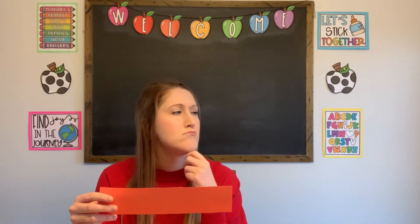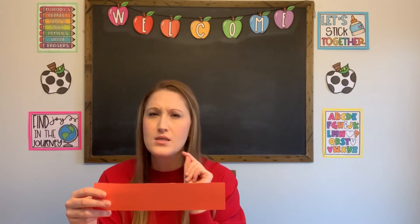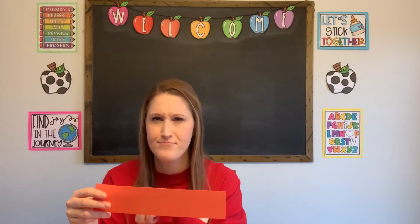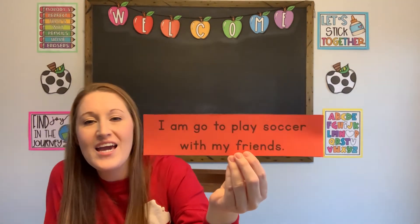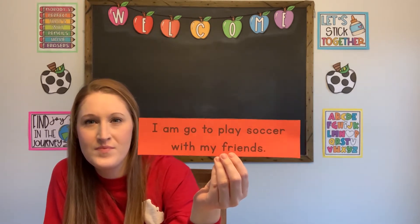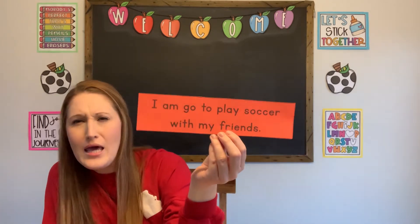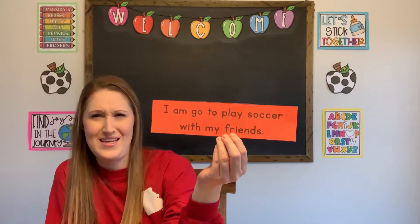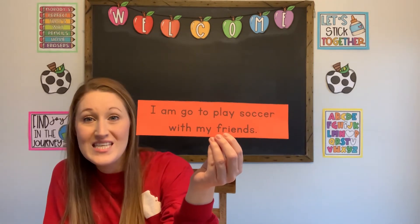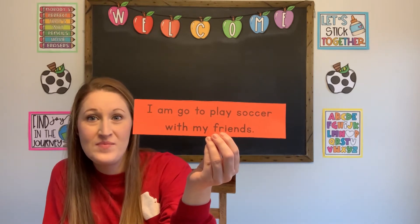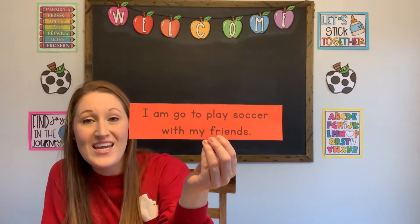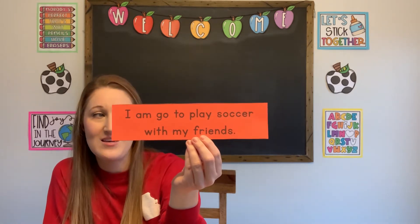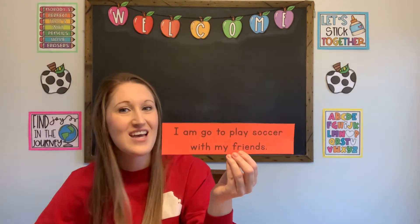Let's try another one: 'I am go to play soccer with my friends.' Something doesn't quite sound right there. Let's look at it: 'I am go' — what? That doesn't sound right. So what can I do to fix it up? That's right, add -ING: 'I am going to play soccer with my friends.' Now it sounds better.